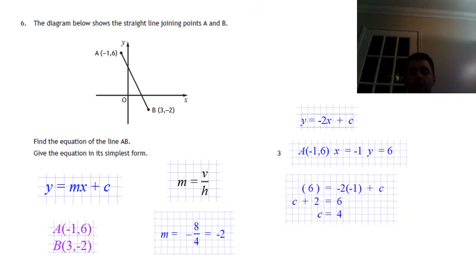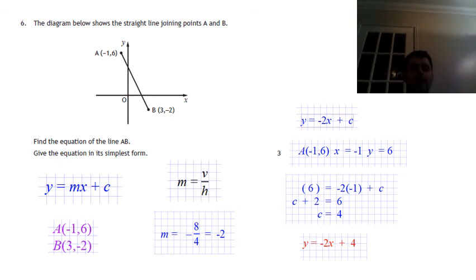Fire that in the equation. End up with 6 equals negative 2 times negative 1 plus c. So c plus 2 equals 6. c is 4. Does that make sense here? That looks like it could be 4 up in the graph there. So that makes sense. The general equation of the line, it's y equals minus 2x plus 4.